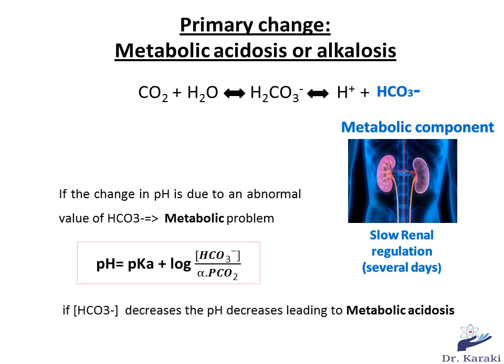The pH and the concentration of HCO3⁻ are directly proportional. If the concentration of HCO3⁻ decreases, the pH will decrease too, leading to metabolic acidosis. If the concentration of HCO3⁻ increases, this will also increase the pH, leading to metabolic alkalosis as a primary change.